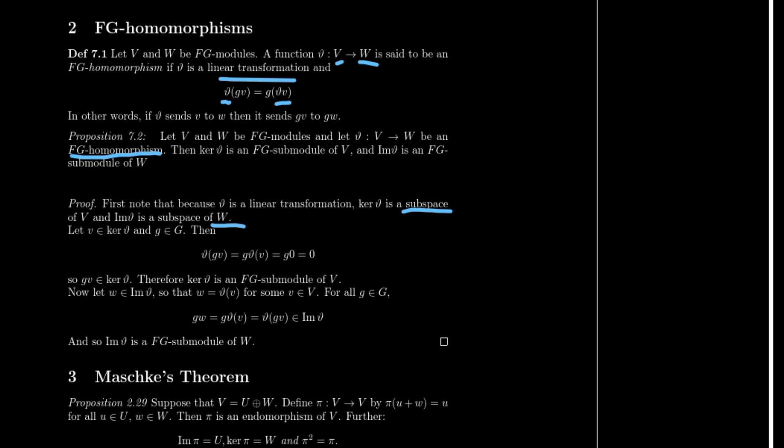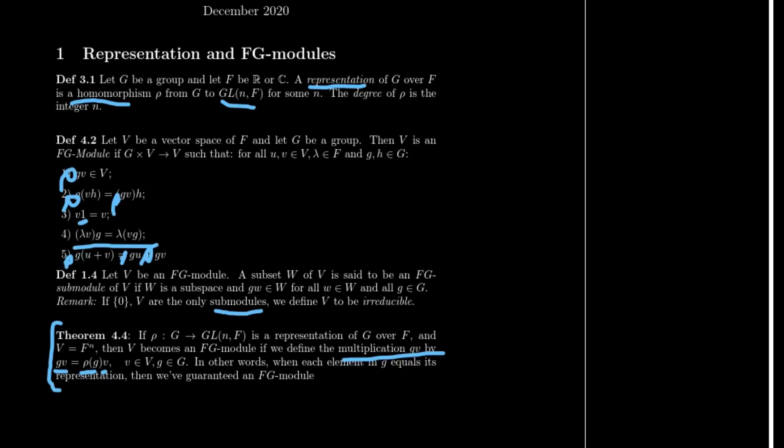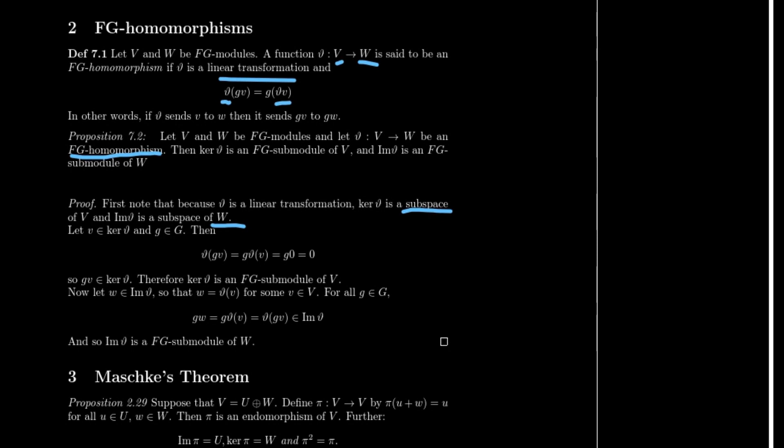All we need to show is that our addition of multiplication here is going to be also maintained from this transformation. So let V be in the kernel of θ and let G be the element in G. So θ of GV, well, we already know from this definition, goes to Gθ V, which because V is in the kernel of θ, this is just going to go directly to zero. Going directly to zero, this becomes a zero itself. Wonderful! This means that GV is in the kernel of θ.